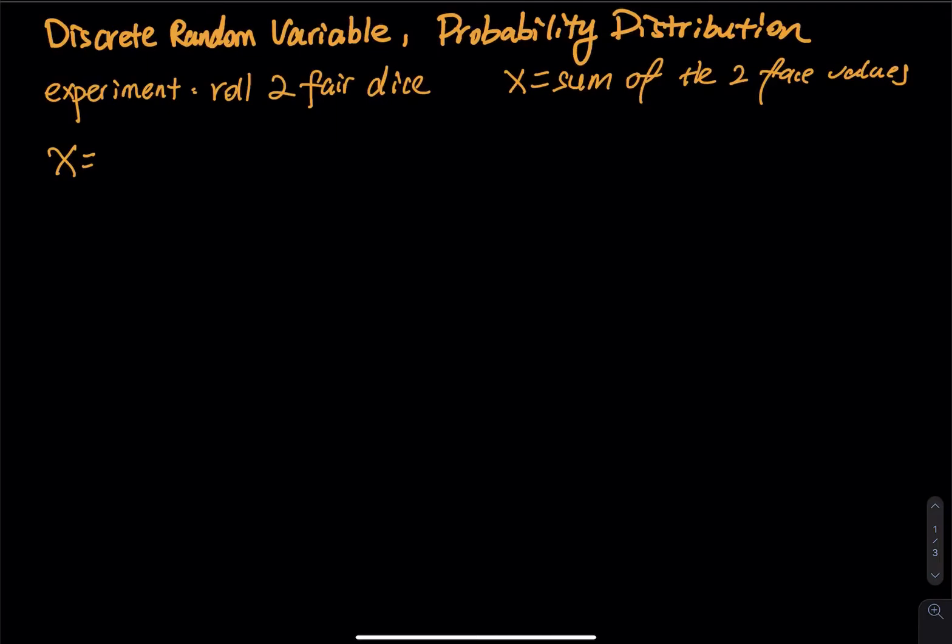So in this video, let the experiment be something really simple. Let's say we roll two fair dice, and let X be the discrete random variable where X equals the sum of the two face values. So the smallest sum we can get is 1 plus 1, which equals 2.